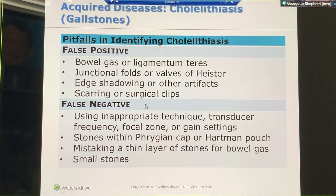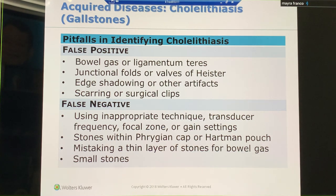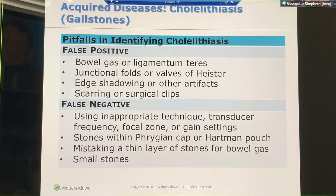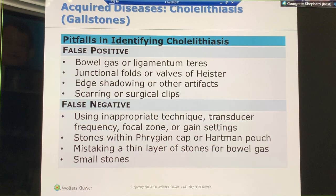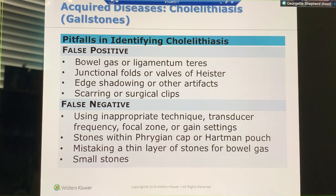Another pitfall: one student measured the IVC as the gallbladder wall. Things happen, especially when we get into a hurry — we can lose our anatomy. You can have edge shadowing, meaning that when the ultrasound hits a curved object, you'll have that shadow on each edge, and the gallbladder is a curved object. Also, if you have scarring or surgical clips in that area, you still have to document the gallbladder fossa — whether they've had a cholecystectomy or not — in both sagittal and transverse.